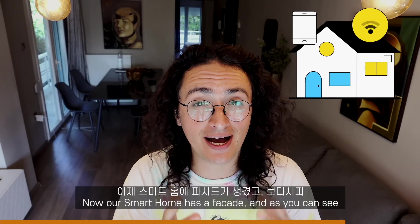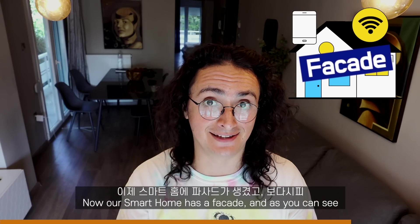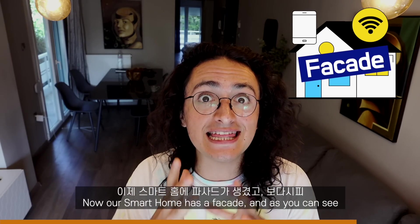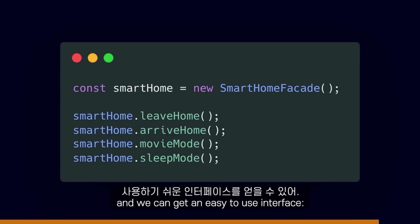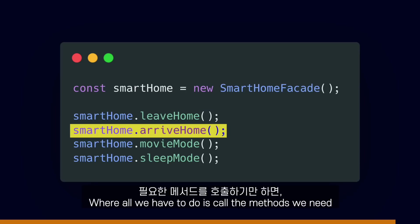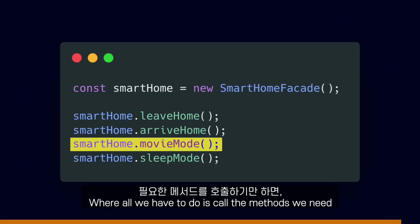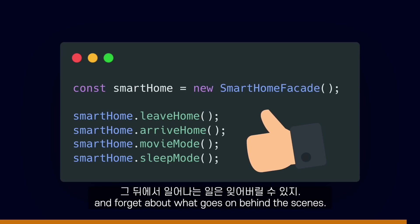Now our smart home has a facade. And as you can see, thanks to the facade pattern we can hide all the complexity and get an easy-to-use interface, where all we have to do is call the methods we need and forget about what goes on behind the scenes.